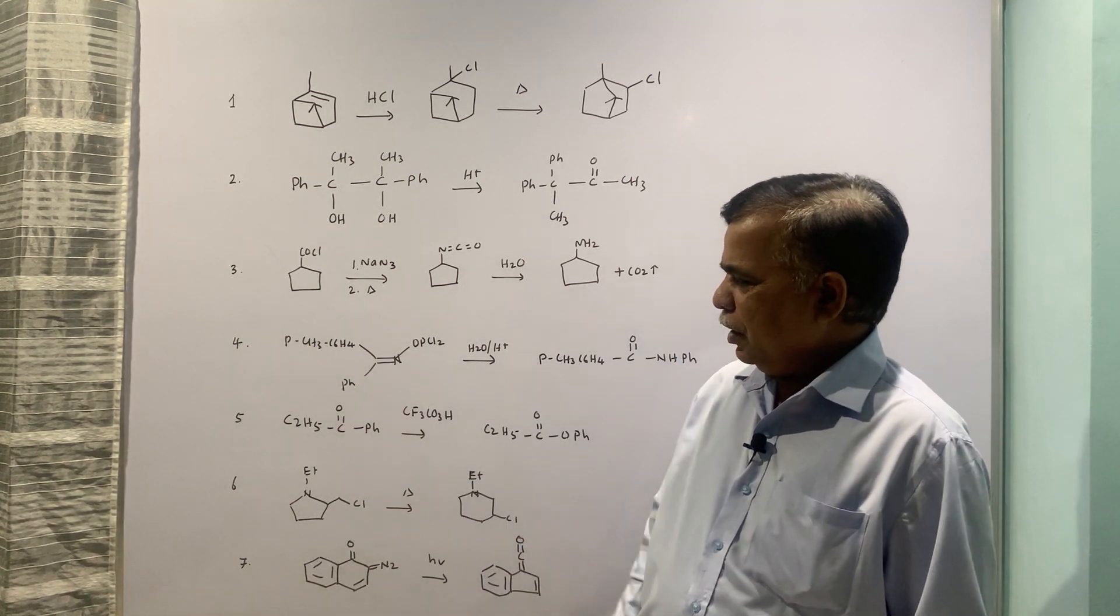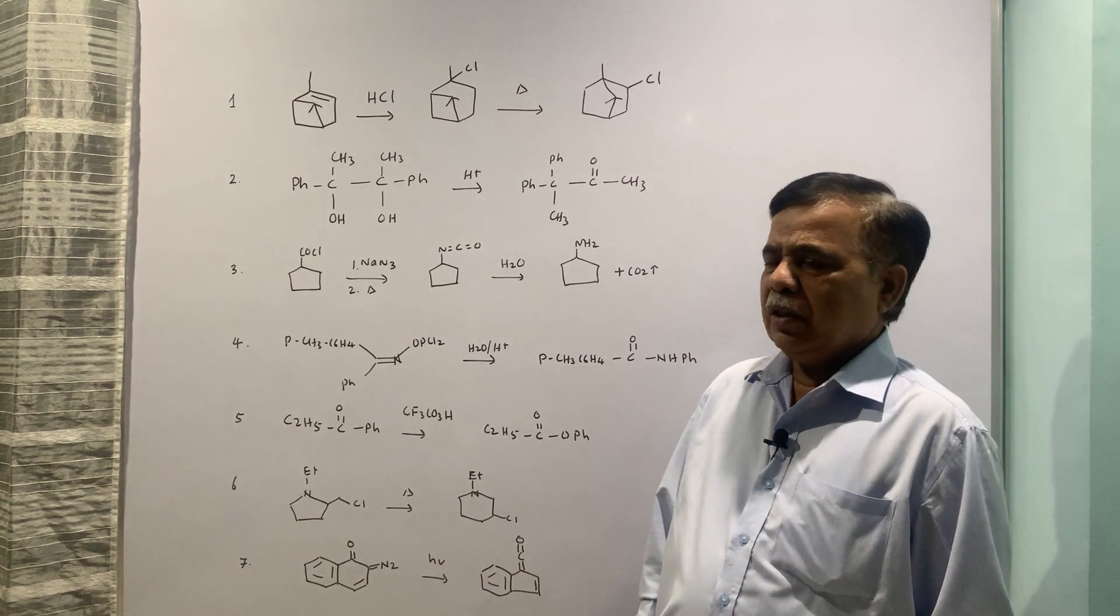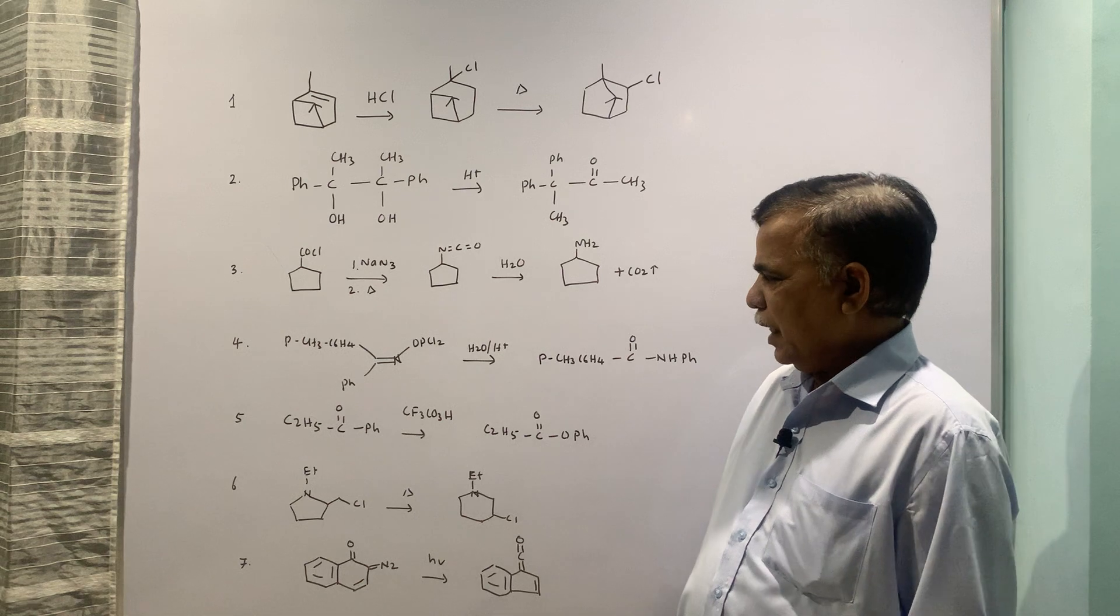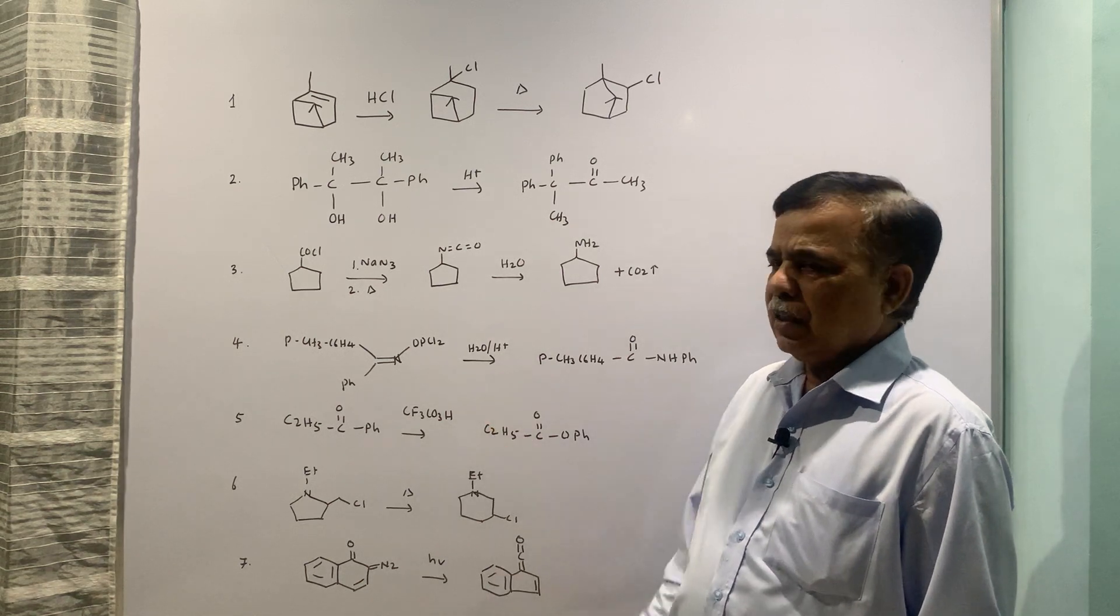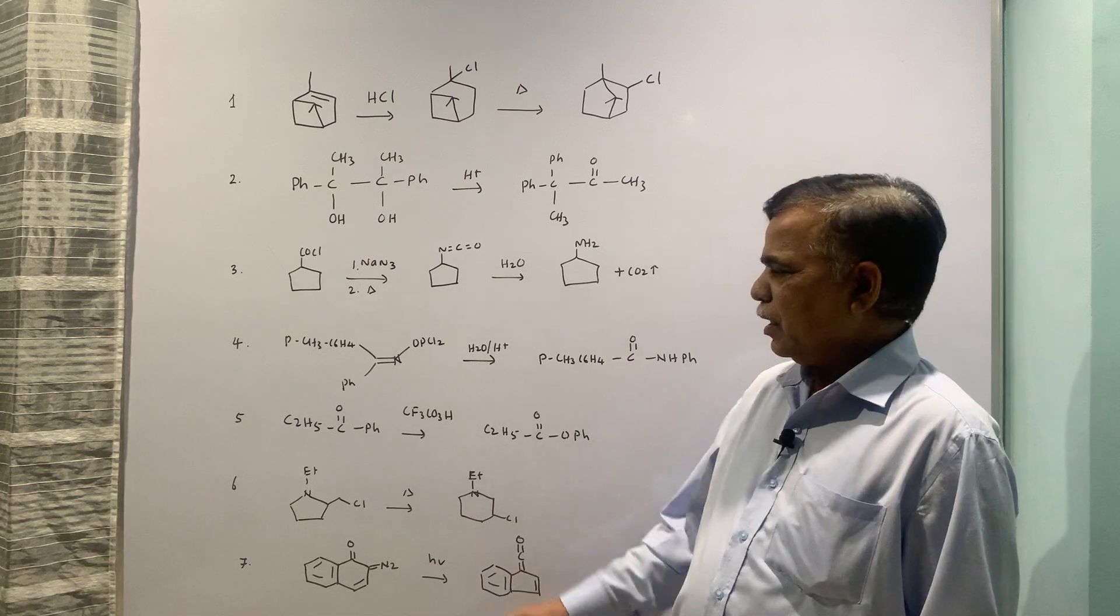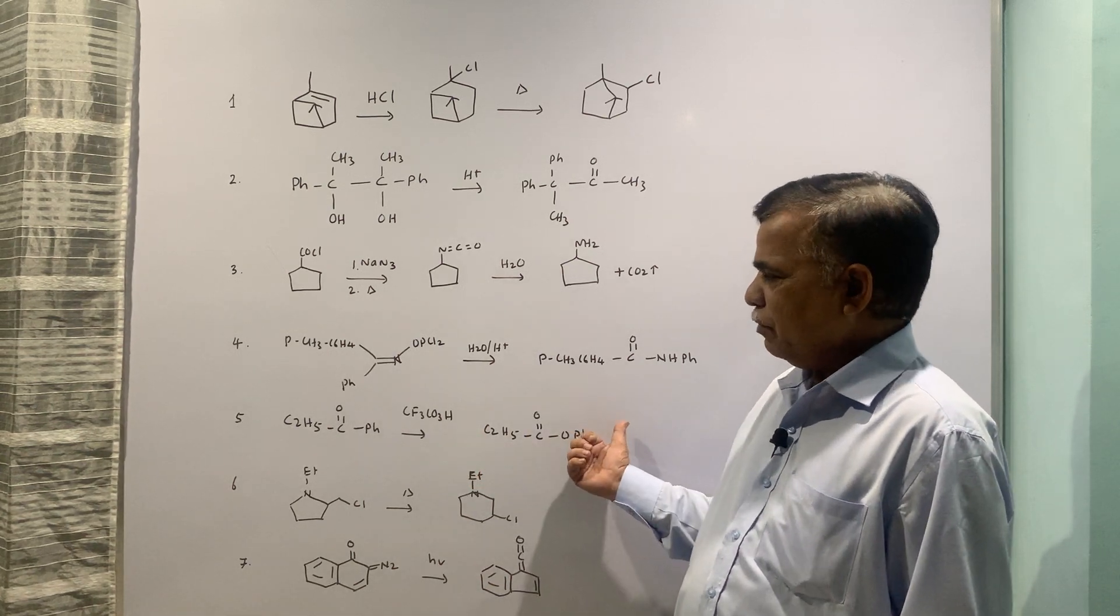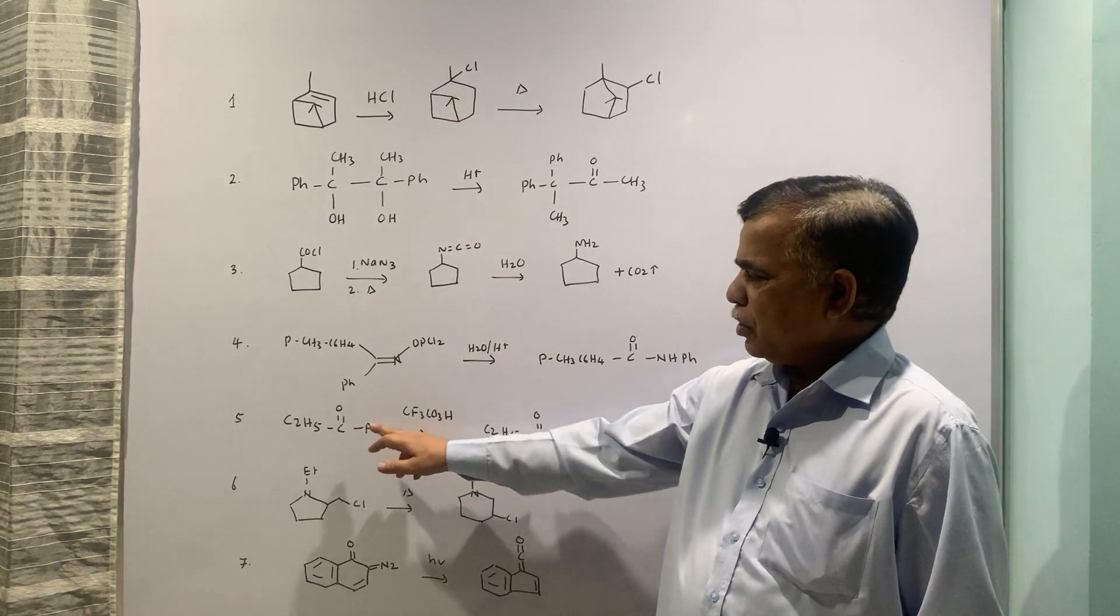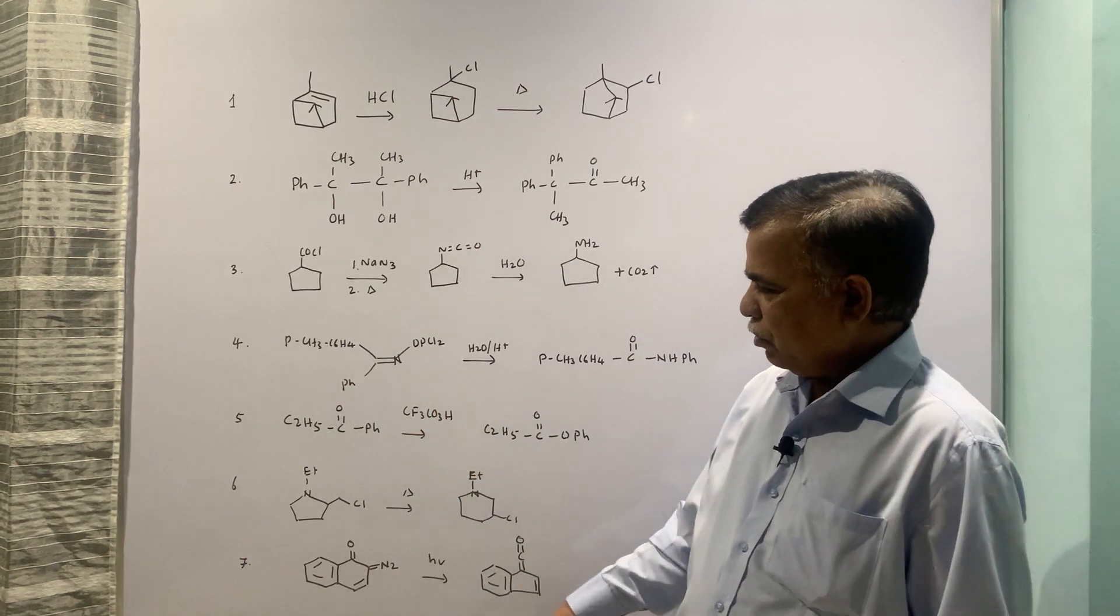Next example, the fifth one is ketone treated with peracid. You get ester. So this is your classical Baeyer-Villiger rearrangement wherein oxygen incorporation will be there and this will become trifluoroacetic acid. So this will undergo reduction, this will undergo oxidation, addition of oxygen, removal of oxygen.